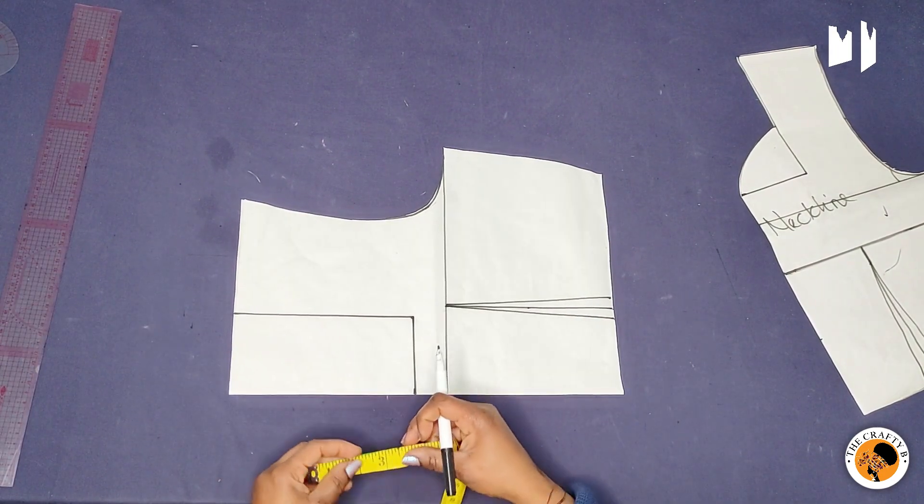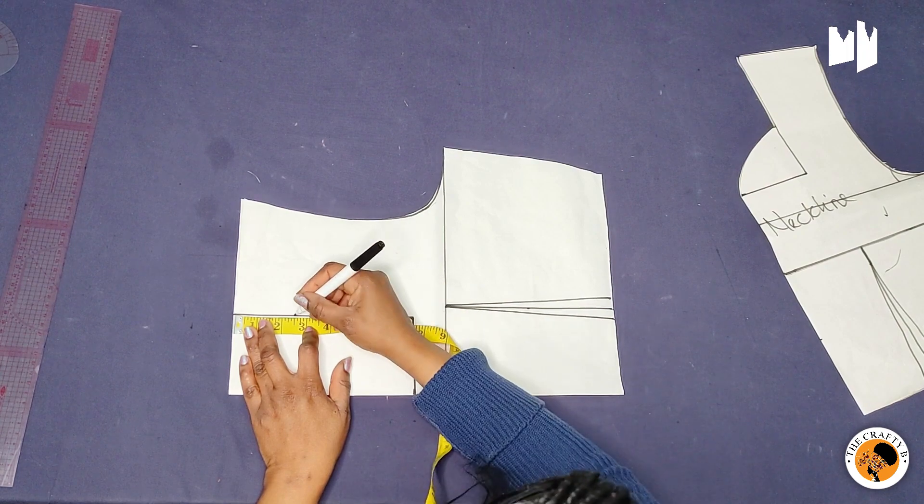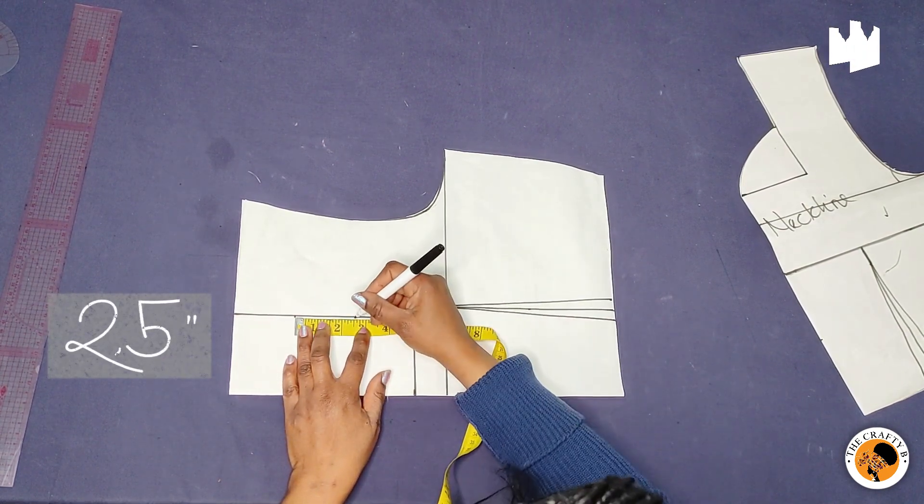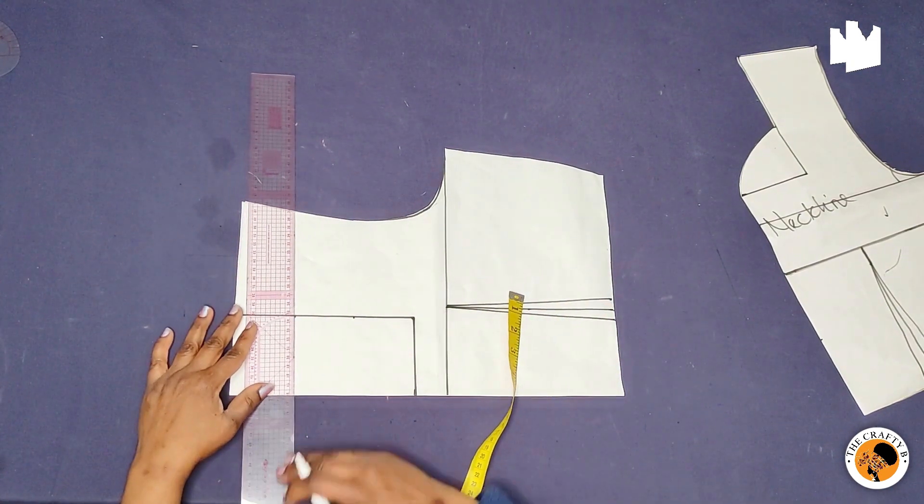So the next thing to do is to divide it by three. I'll come down two and a half inches and then two and a half inches again, and then I'll draw a straight line.